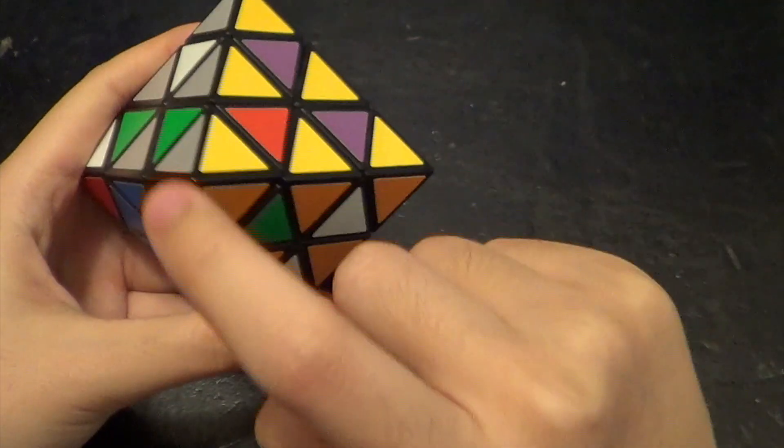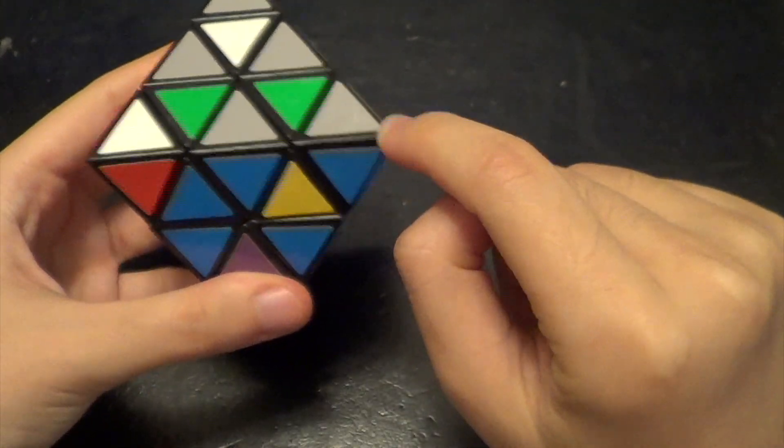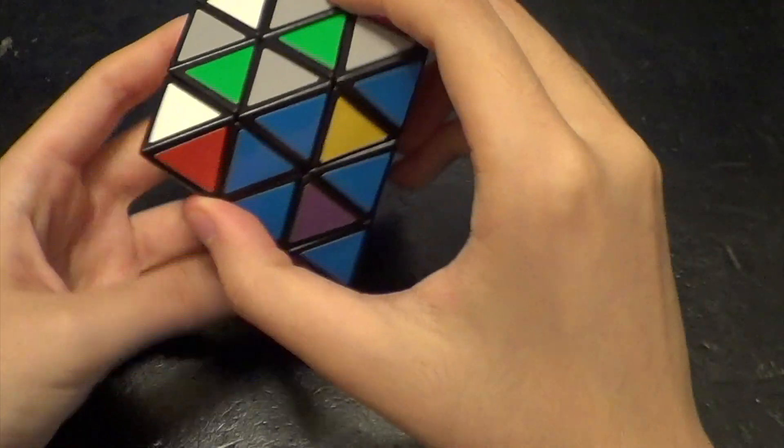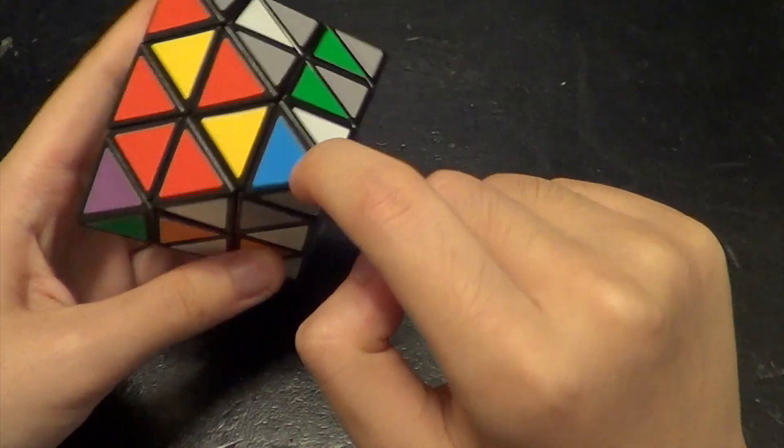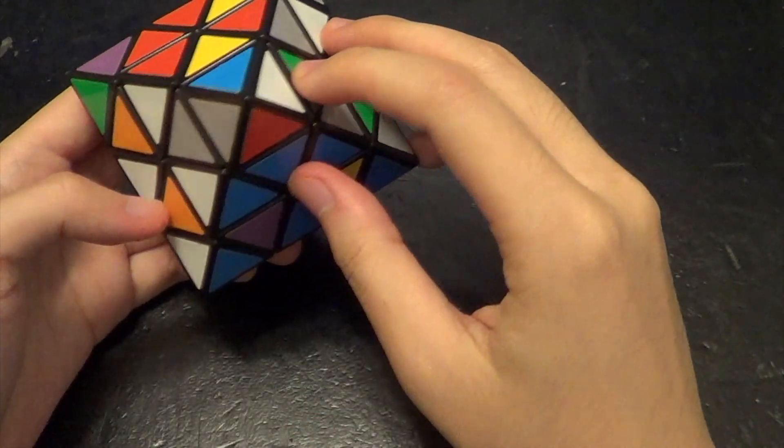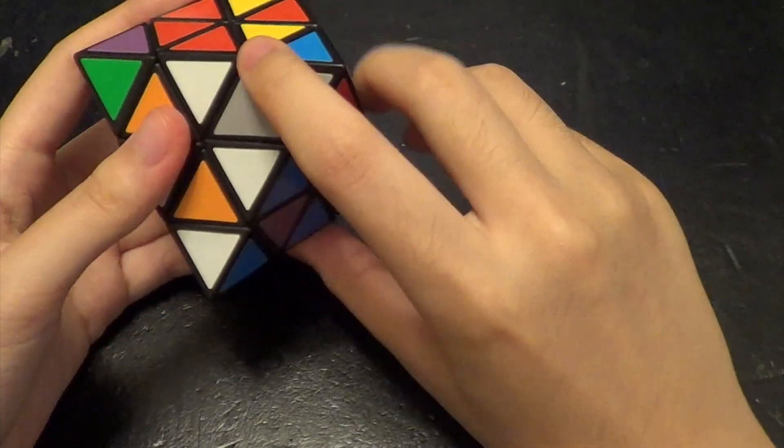Alright, so now we can see that this corner is in the correct orientation, this one was messed up, so we turn the cube so that these two are the only ones that need to be fixed, and then we do the same thing again.